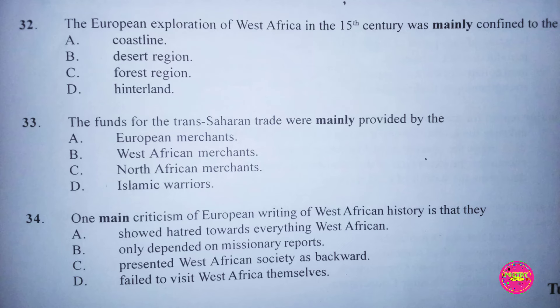Question 34. One main criticism of European writing of West African history is that it: A. Showed hatred towards everything West African, B. Only depended on missionary reports, C. Presented West African society as backward, D. Failed to visit West Africa themselves. The correct answer to this question is C. Presented West African society as backward.